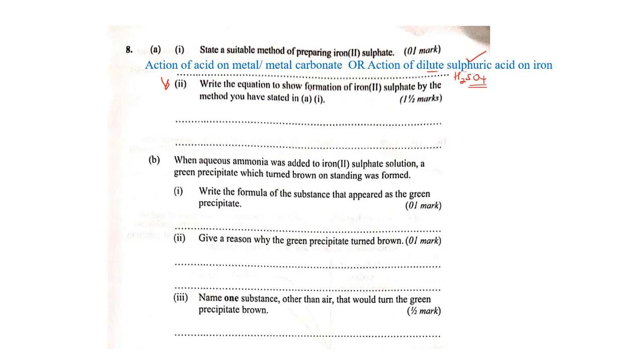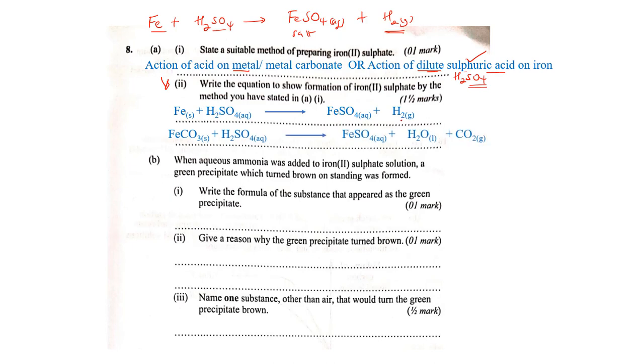Part ii says write the equation to show formation of iron(II) sulfate by the method you have stated above. We have our metal which is iron and our acid which is dilute sulfuric acid. We prefer dilute sulfuric acid because concentrated might give other byproducts like sulfur dioxide or oxidize iron. The iron will replace hydrogen, forming iron sulfate which is soluble in water plus hydrogen gas. A metal with an acid will form a salt plus hydrogen gas.